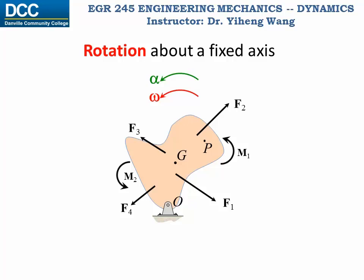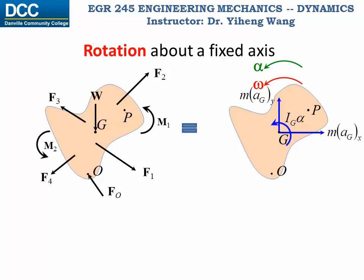Based on the equations of motion for general plane motion, let's now derive the equations for the special case of rotation about a fixed axis. In this case the object is pinned at point O, so it is only allowed to rotate about an axis perpendicular to this plane passing through point O. For general plane motion, the rotation is always about an axis perpendicular to this plane. We start by drawing the free body diagram and kinetic diagram of this object.